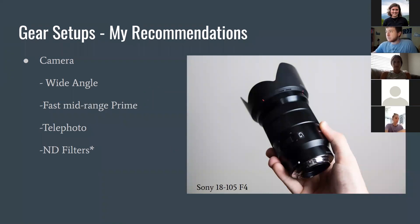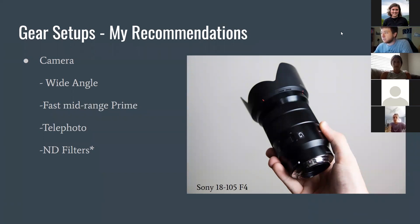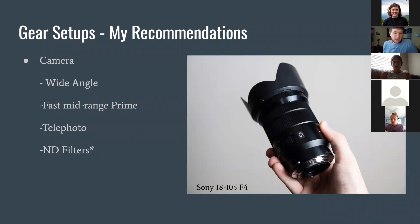We'll start with gear setups. Since this is filming basics, I'm mostly going to be focusing on the visual side — we already had an audio lecture. The first part of my gear setups section is about lenses. I narrowed it down to what I think are the three types of lenses you might need: a wide angle, a fast mid-range prime, and a telephoto lens. As a special add-on, I put ND filters.